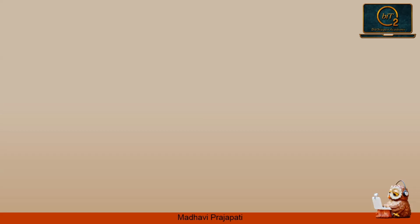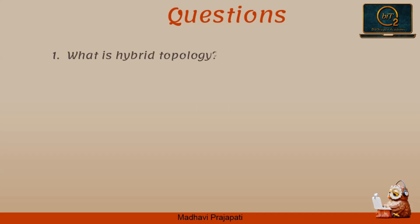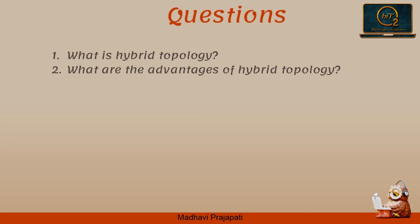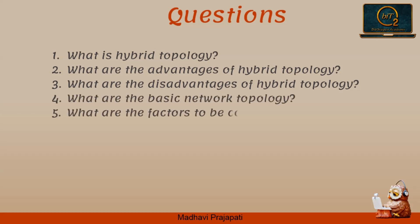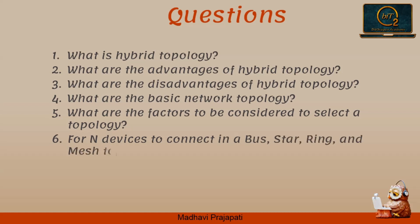Hope you understand it well and are now able to answer some questions. What is hybrid topology? What are the advantages of hybrid topology? What are the disadvantages of hybrid topology? What are the basic network topologies? What are the factors to be considered to select a network? For N devices connected in a bus, star, ring, and mesh topology: how many cables are required, and how many input/output ports are required?